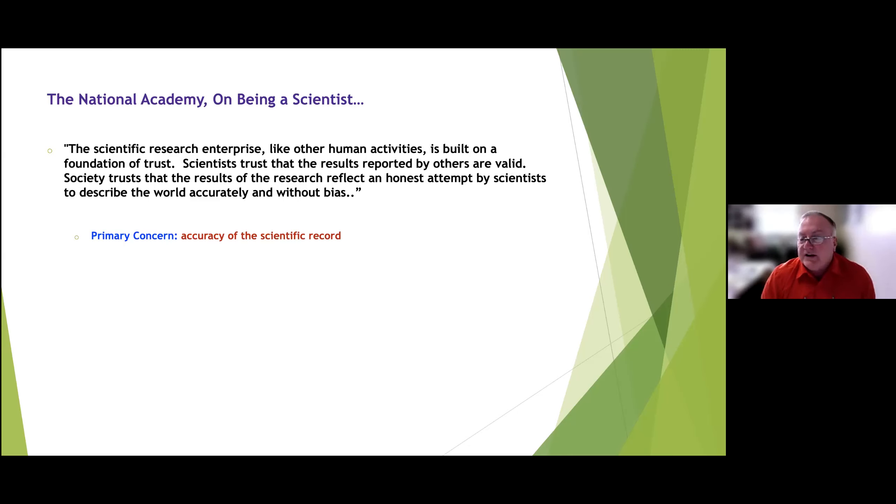According to the National Academy's 'On Being a Scientist,' the scientific research enterprise is built on a foundation of trust. Scientists trust that results reported by others are valid. Society trusts that research reflects an honest attempt to describe the world accurately and without bias. It is critical that the scientific record be accurate — without that, there is distrust of science and scientific results, such as we're seeing right now with the COVID vaccine.